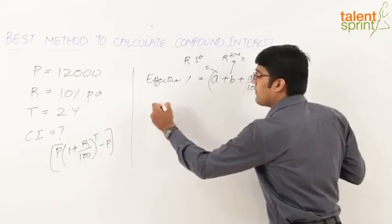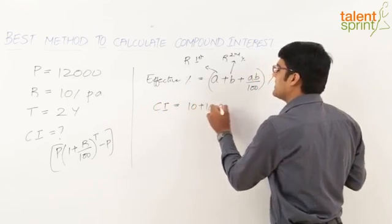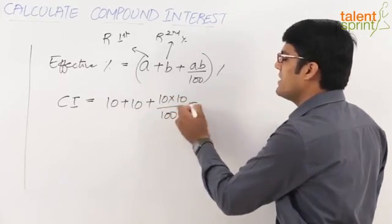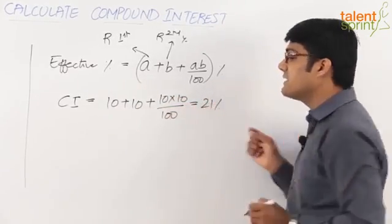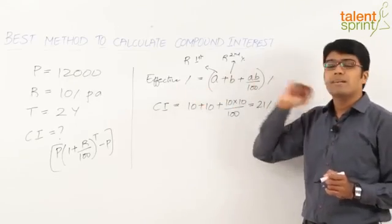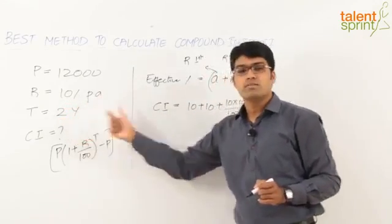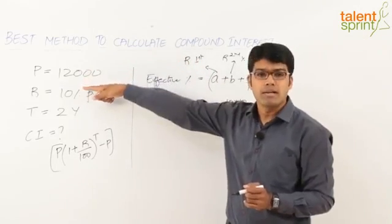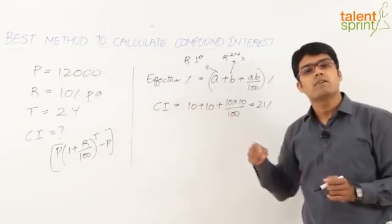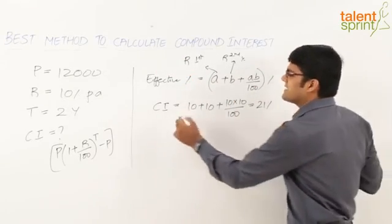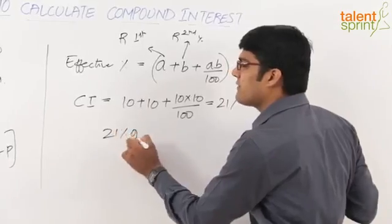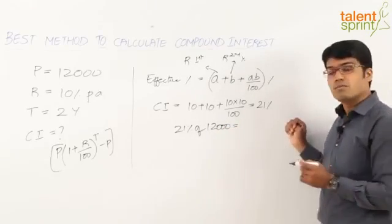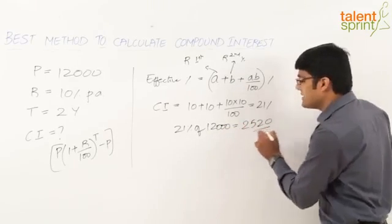So the compound interest here equals 10 + 10 + (10 × 10)/100, which is 20 + 1 = 21%. The total compound interest for 10% per annum over 2 years is 21% of the principal amount. Interest calculations are always based on the principal amount, so the final answer is 21% of 12,000 rupees, which is 2,520 rupees.